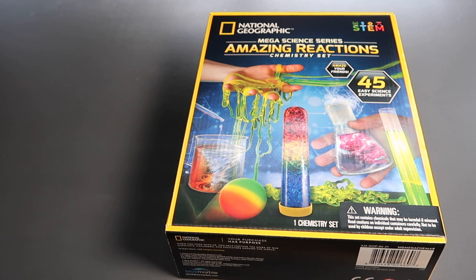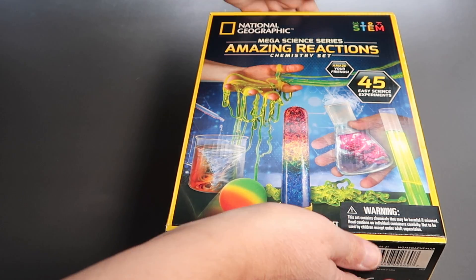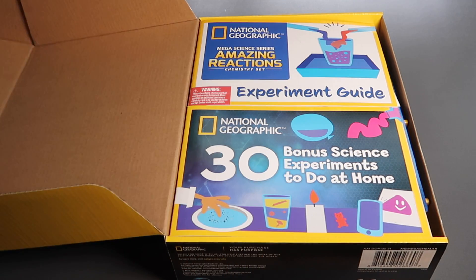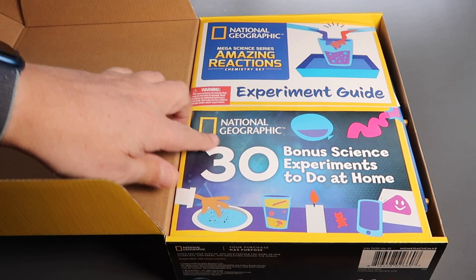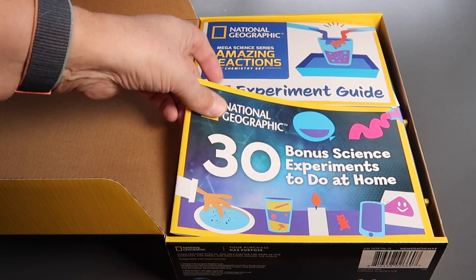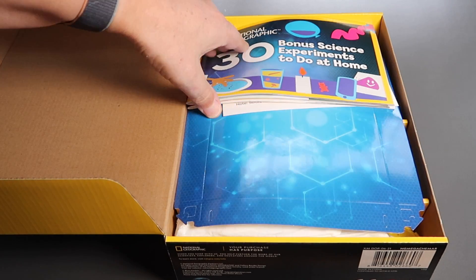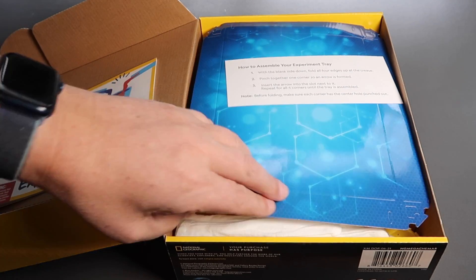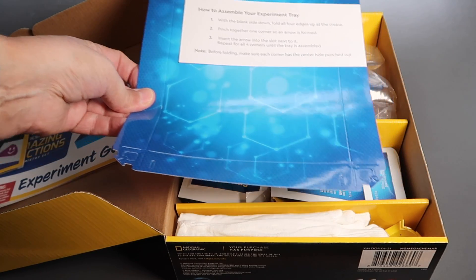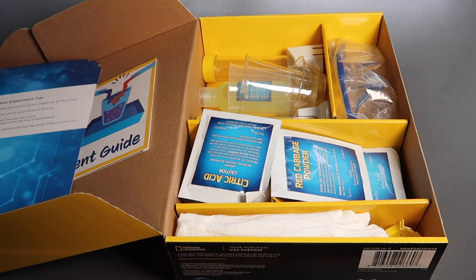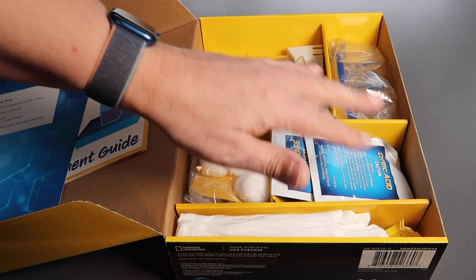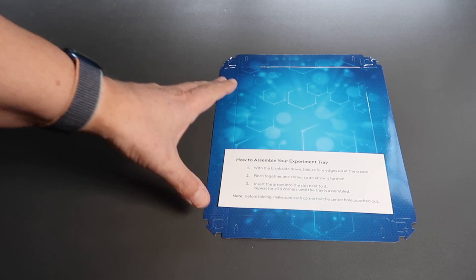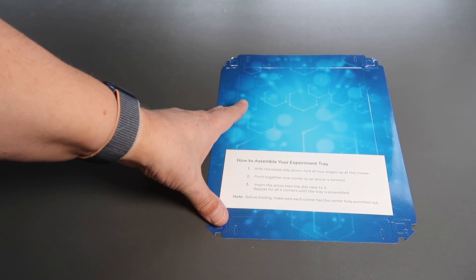Full marks to the organization inside this kit. There's two experiment guides, a little tray that you can assemble to do experiments in, and they've got all the equipment nicely organized inside. We have an experiment tray, easy to assemble.